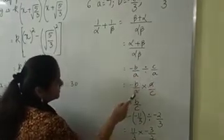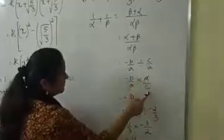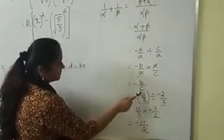Work this. So it's minus b by a, division becomes multiplication, take the reciprocal, a by c. a gets cancelled, so we have minus b by c.